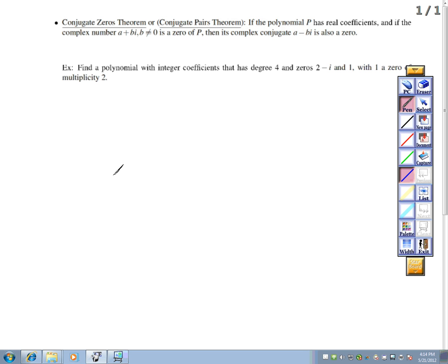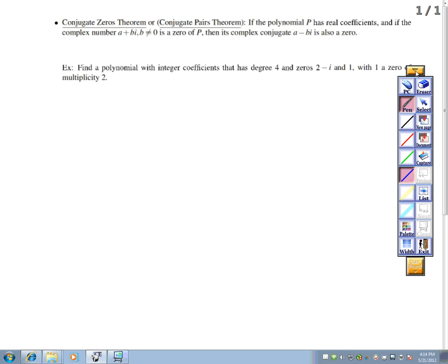So we're going to find a polynomial with integer coefficients that has degree 4 and zeros 2 minus i and 1, and the 1 is a zero of multiplicity 2.